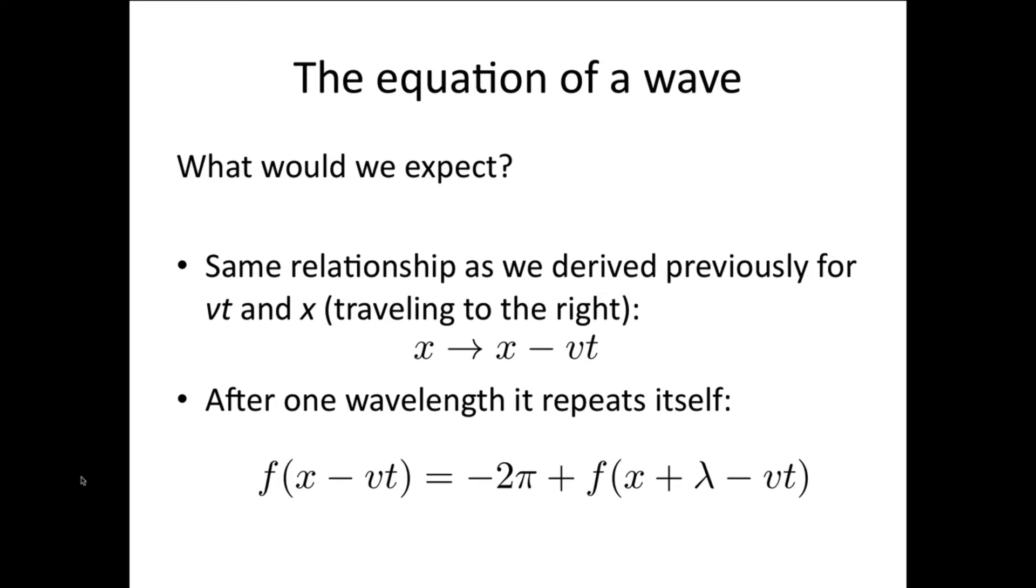Well, first of all, we'd expect the same relationship as we derived previously for vt and x. So that if it's traveling to the right, then x becomes x minus vt.